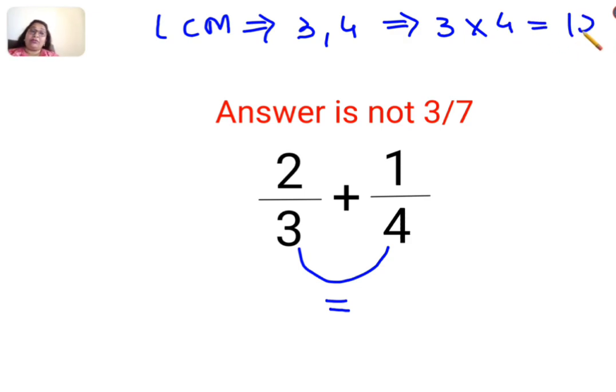So basically I want the denominators to come out to be 12. Now how do I do this? See, 2 upon 3, I want to convert this 3 into 12, so I need to multiply 3 by 4.